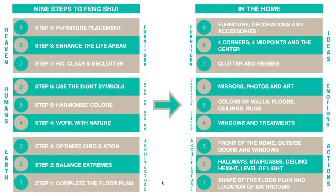These are the aspects of the home where you apply the nine steps to Feng Shui. Step 1: complete the floor plan. That has to do with the shape of the floor plan and the location of bathrooms.